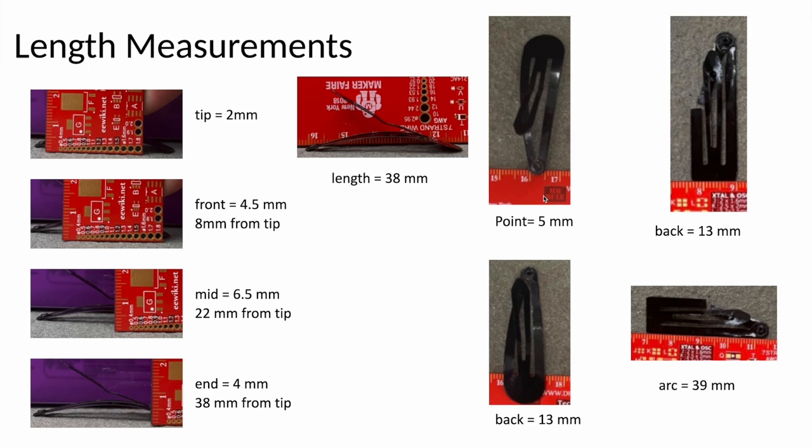I also did a whole bunch of angle measurements. I measured that the angle from the tip to the back of the hair clip was 9 degrees, and in the other direction, from the back of the hair clip in the direction of the tongue to the eyelet, it was 24 degrees. And then for the broken hair clip, I measured the back corner was 90 degrees, and I superglued the top part before I intentionally broke it, and I measured that that angle was 17 degrees.